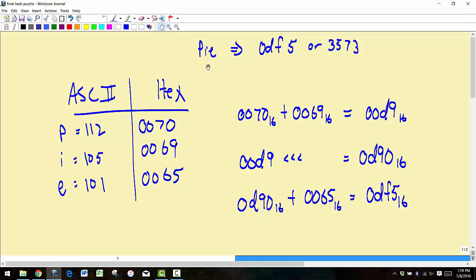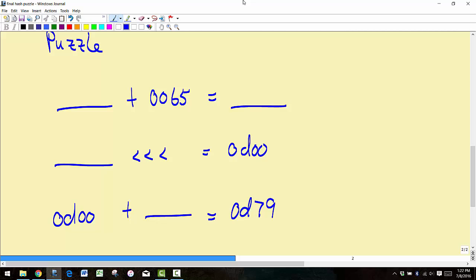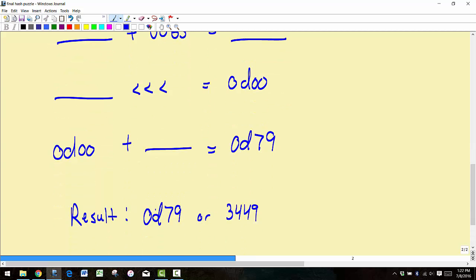So here's the puzzle idea. Basically it's a very similar situation in that we've got some string of text represented in hexadecimal and we get this hash or digest out. So basically the hash is 0d79 or in decimal 3,449. So the question is, what number does this match up to?